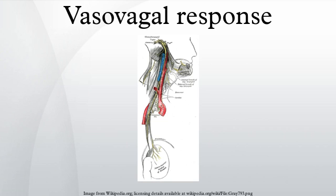On the other end of the spectrum is the vasodepressor response, caused by a drop in blood pressure without much change in heart rate. This occurs due to vasodilation, probably as a result of withdrawal of sympathetic nervous system tone. The majority of people with vasovagal syncope have a mixed response somewhere between these two ends of the spectrum. One account for these physiological responses is the vasovagal reflex.